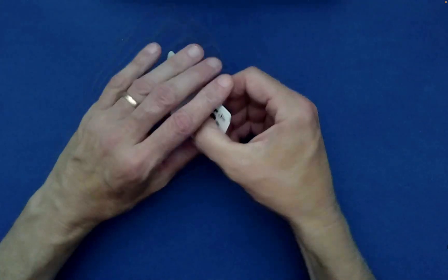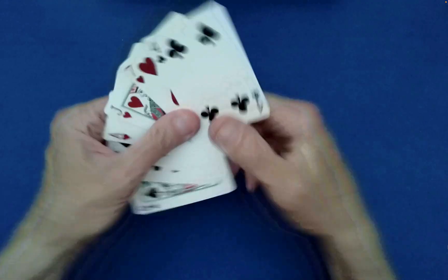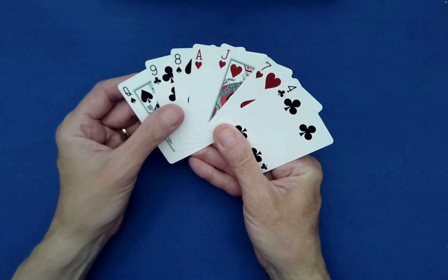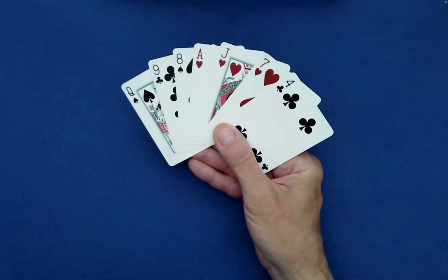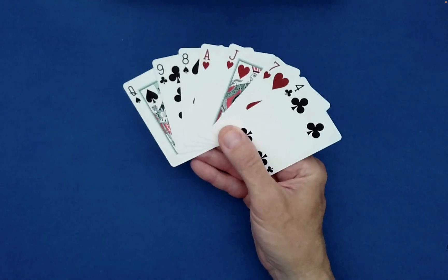So how this works is you need to have, in fact, let me just bring a non-double back card here. You need to have a prime number of cards. So seven, 11, I wouldn't go much beyond 13 because it can just take too long.